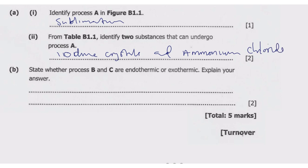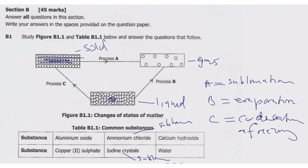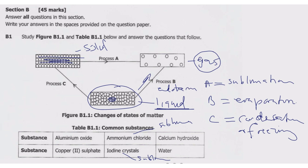For question B, process B is evaporation, which is an endothermic reaction because heat energy is absorbed to break the bonds of the liquid particles. Process C is condensation or freezing, which is exothermic because heat energy is released when the bonds of the solid are being built.